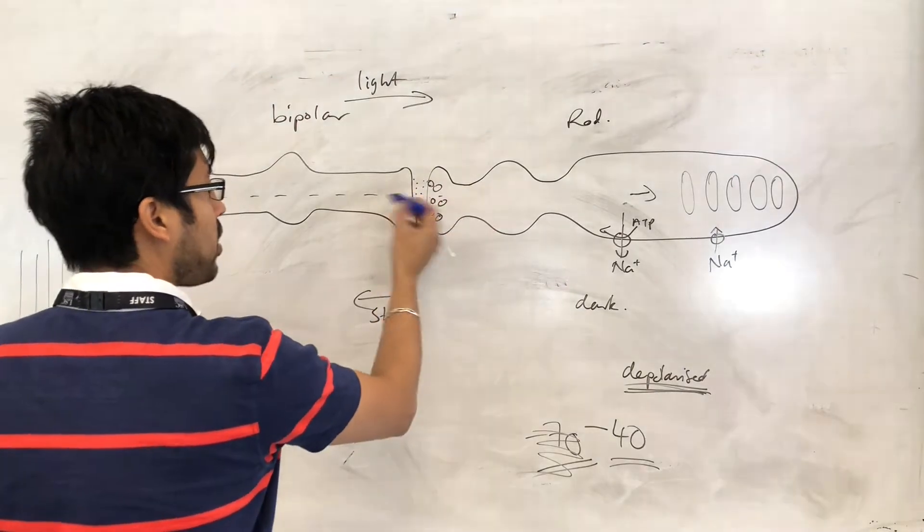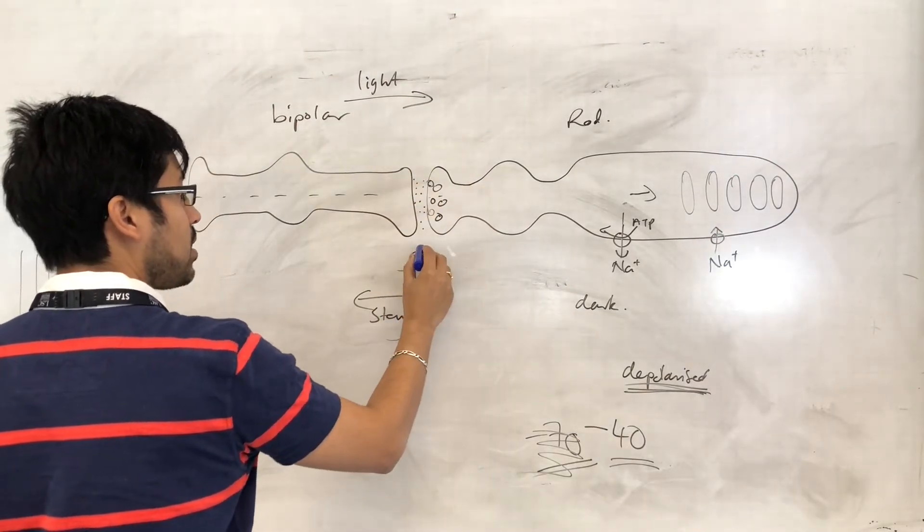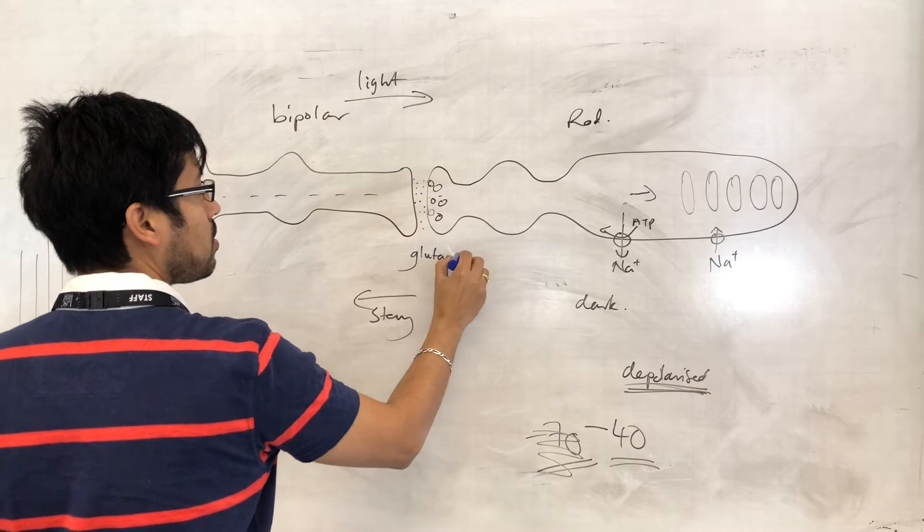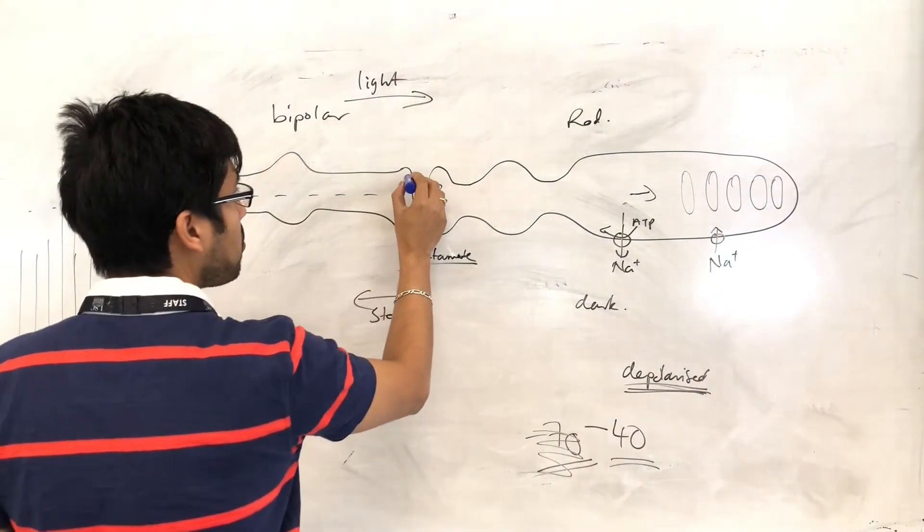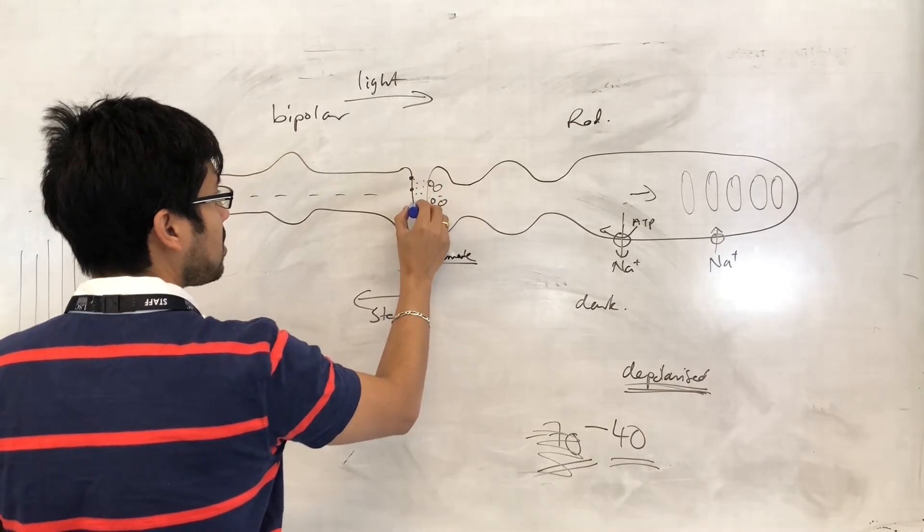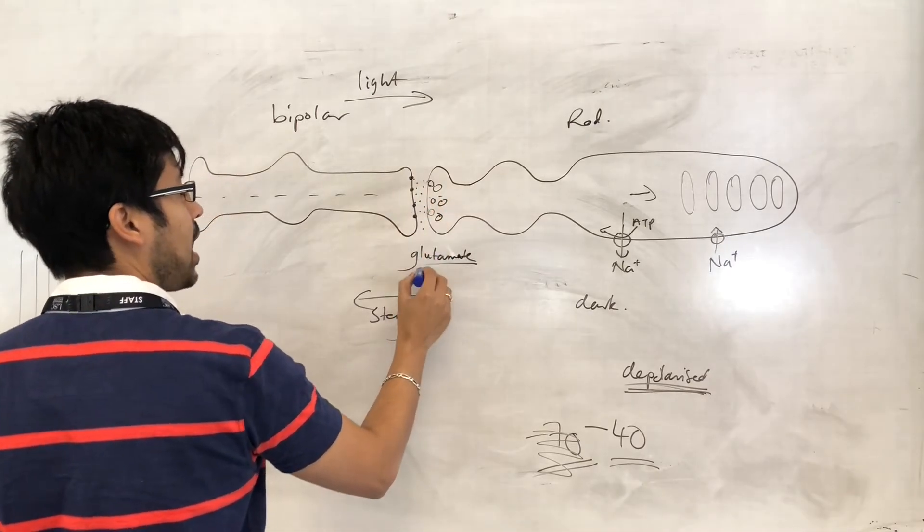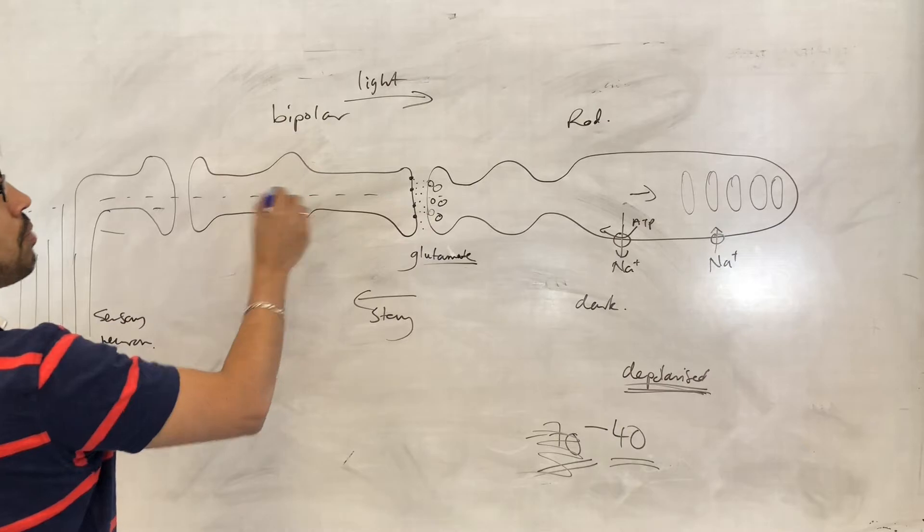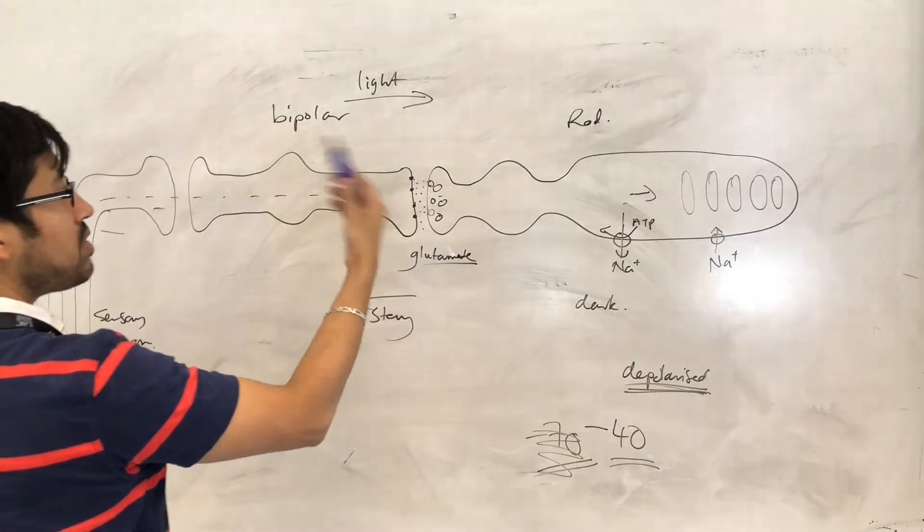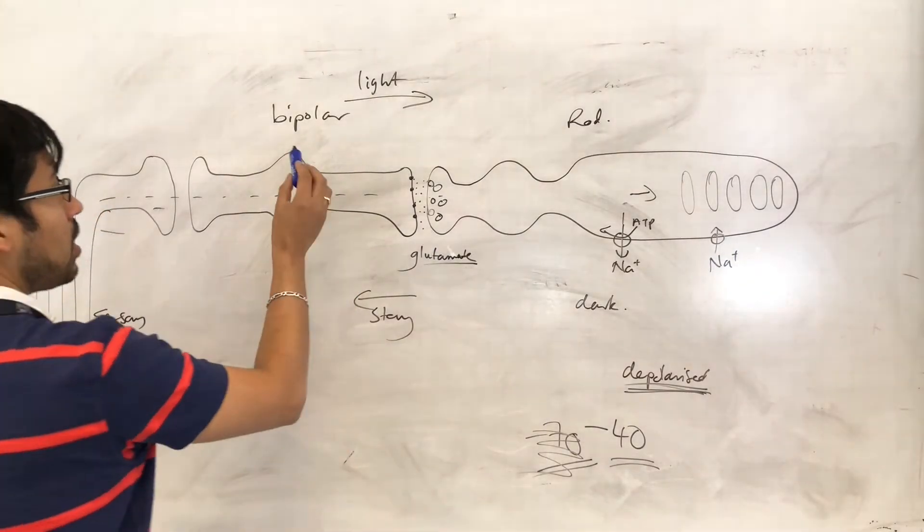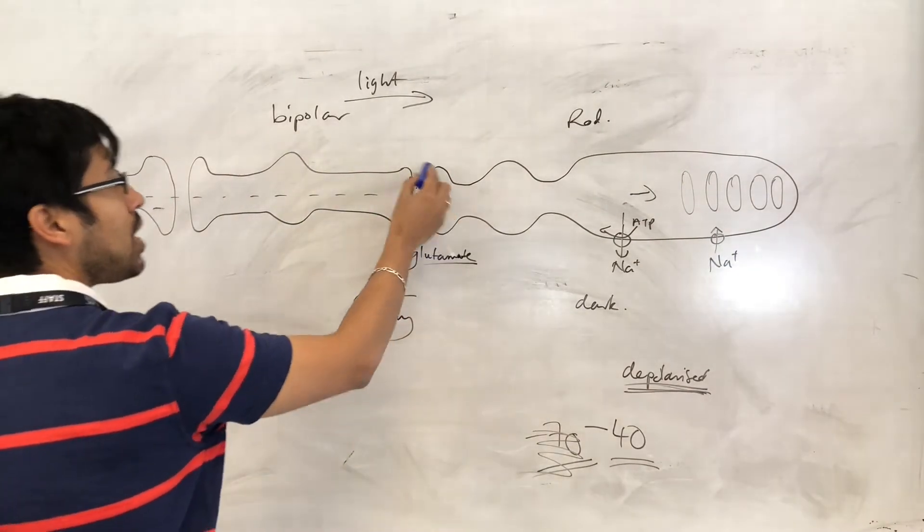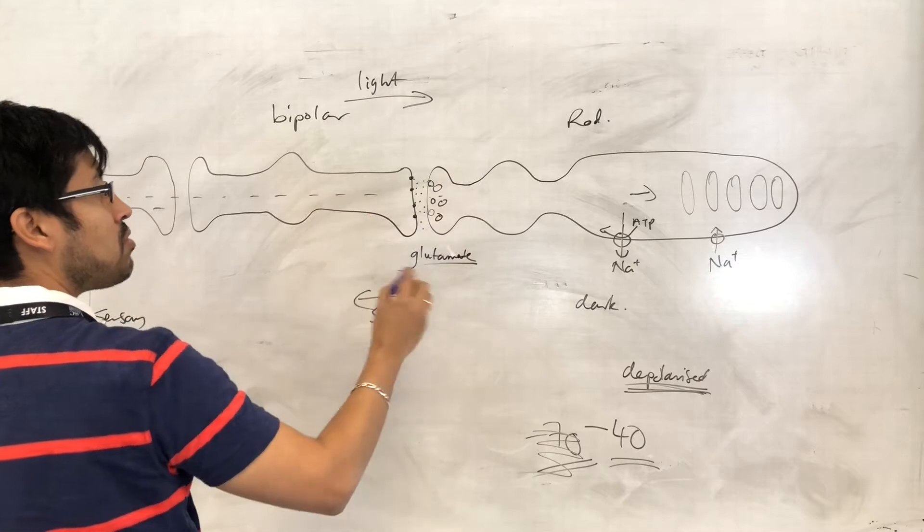The neurotransmitter that is released is not acetylcholine. It is glutamate. And the important thing about this neurotransmitter is that it acts in an inhibitory way on the bipolar cells. So, we've talked about synapses, we've discussed that whereas some synapses can be excitatory, other ones can be inhibitory, and this is an example of an inhibitory synapse.